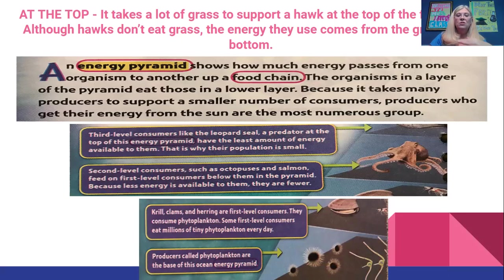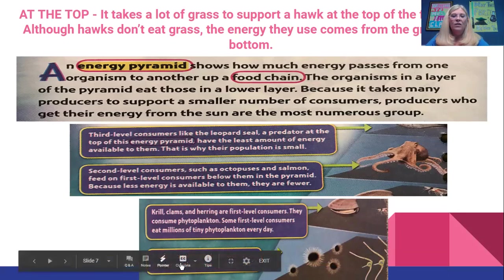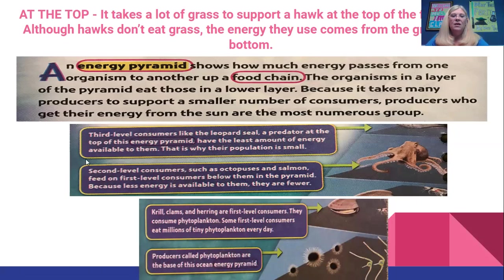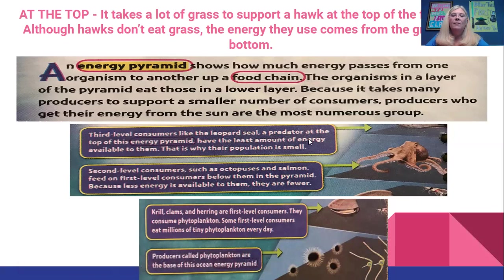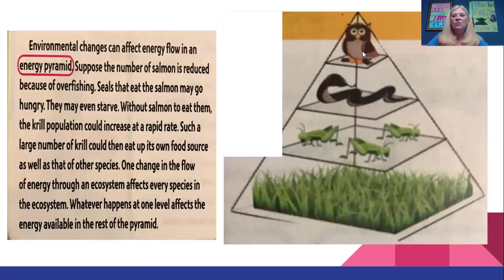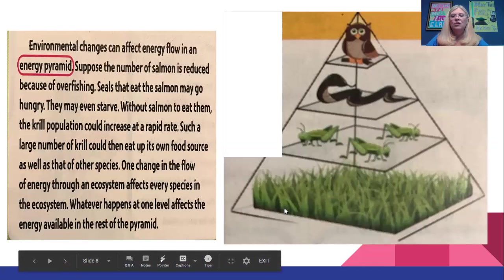Second level consumers like an octopus and salmon feed on the first level consumers. So in this pyramid, at the very bottom you have the phytoplankton, then the krill and the clams, then at the second level the octopus and salmon feeding on the krill, clams, and herring, and then at the top you have the leopard seal who can only eat the things just below him. Here is the energy pyramid diagram.